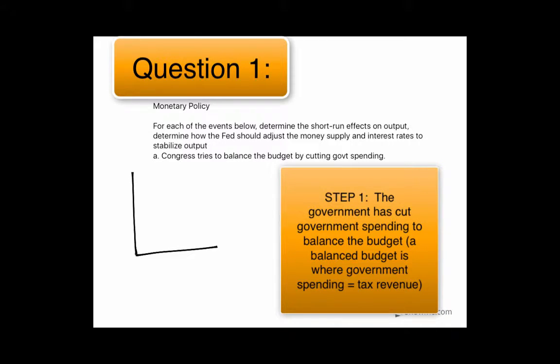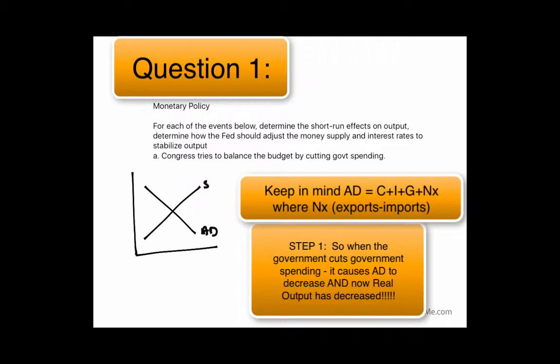So you have aggregate demand, and this is your short-run aggregate supply. And if government spending goes down, then we have a decrease in aggregate demand to aggregate demand 2.